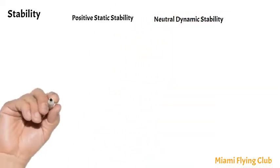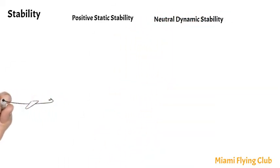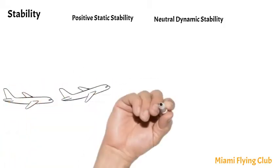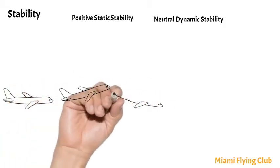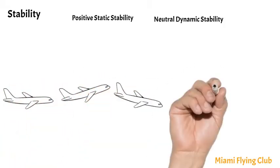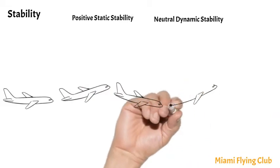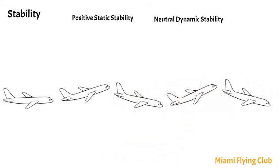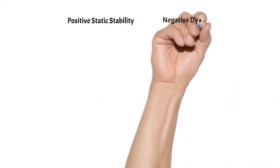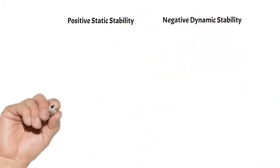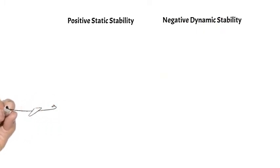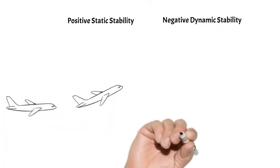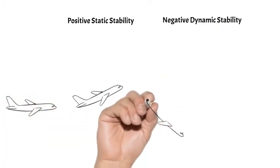Neutral Dynamic Stability causes an aircraft to hunt back and forth around a condition of straight and level flight, with the correction getting neither larger nor smaller. Negative Dynamic Stability causes the forces of static stability to increase with time.